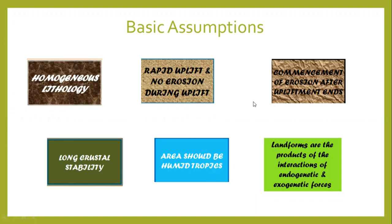Davis had six basic assumptions for his cycle theory. The first is homogeneous lithology — the lithology of the whole area must be homogeneous, meaning there must be similarity in the lithological aspect. The second is rapid uplift with no erosion during uplift. According to him, there should be rapid uplift of the land occurring in a very short time, and erosion does not take place during the process of uplift.